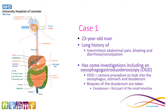I have a few made-up case histories, just to illustrate the range of specimens that we receive within the laboratory. Case 1 is a 23-year-old man who's got a long history of on-and-off abdominal pain, bloating, diarrhoea and constipation. He has some investigations, including an OGD. This is a camera procedure which looks in the oesophagus, through the stomach and to the duodenum. Some biopsies of the duodenum are taken.